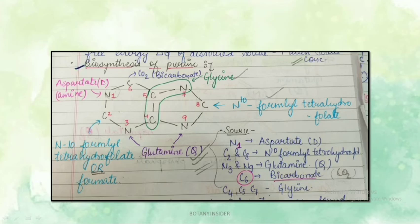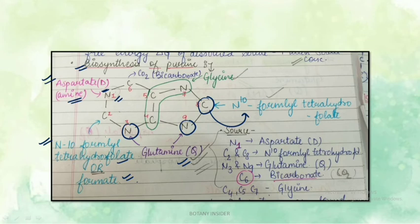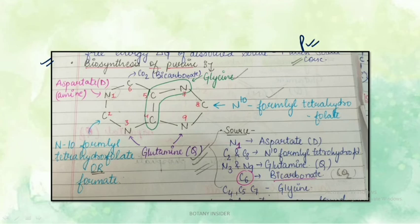Regarding purine biosynthesis: N1 (first nitrogen) is derived from aspartate. C2 and C8 are both derived from N10-formyl tetrahydrofolate (or formate). N3 and N9 are derived from glutamine. C6 is derived from CO₂ (bicarbonate). C4, C5, and N7 are all derived from glycine. Going through these points repeatedly will help you remember them.